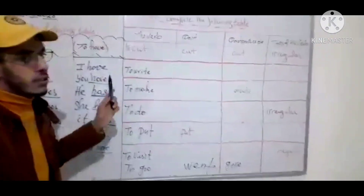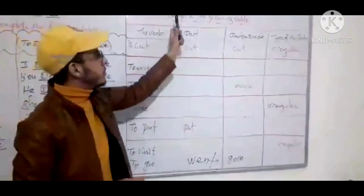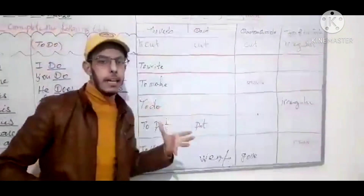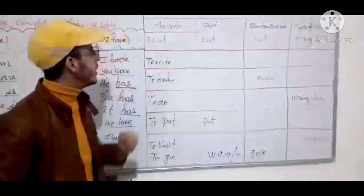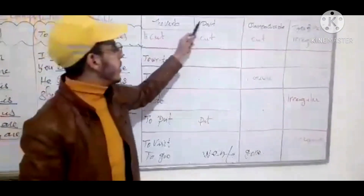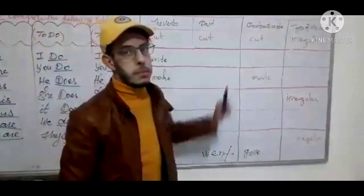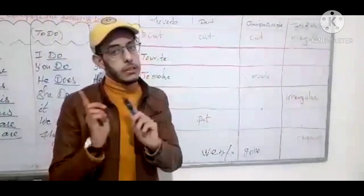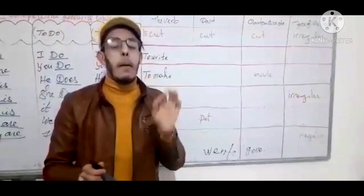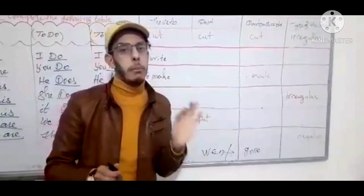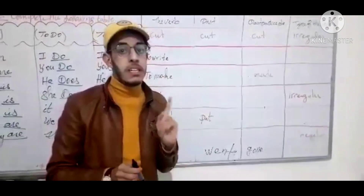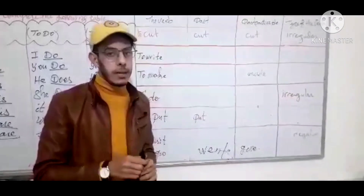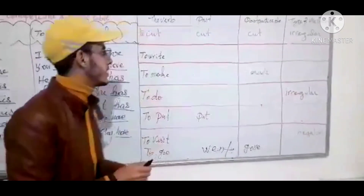Now let's move to task two. We have another verb table: past and past participle — how irregular and regular verbs must be memorized. Be careful, for a good preparation for the exam, you must memorize this.